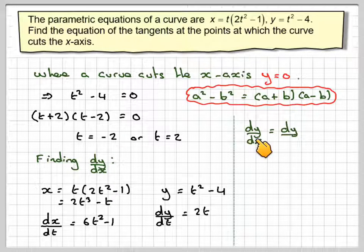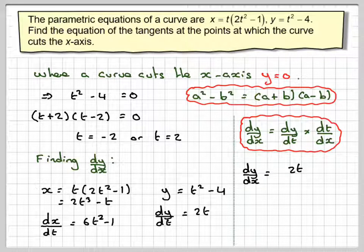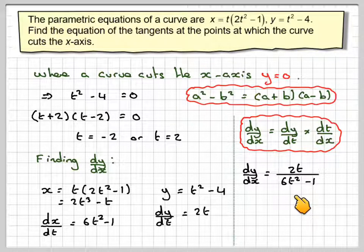Then using the chain rule, dy by dx is dy by dt times dt by dx. So dy by dt is 2t, and we multiply by 1 over (6t squared minus 1). That becomes altogether 2t over (6t squared minus 1).